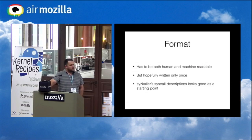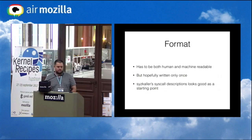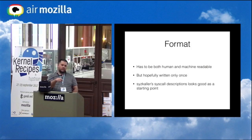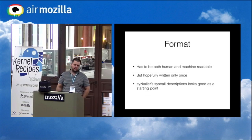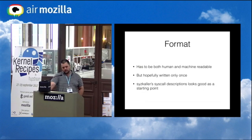I've started looking at what Syzkaller provides. Syzkaller is a pretty intelligent coverage-based system call fuzzer — it does coverage based on how deep it gets into the code, figures out what code paths it poked, and then mutates input to trigger more code paths. To do that it has a pretty extensive description of system calls in machine-readable format. I started using that and tried to turn it into something we can use in the kernel.